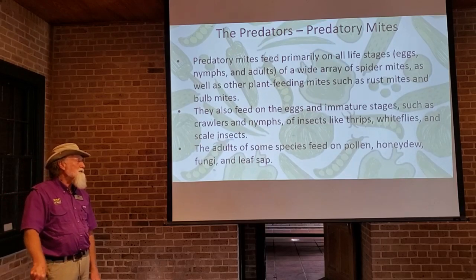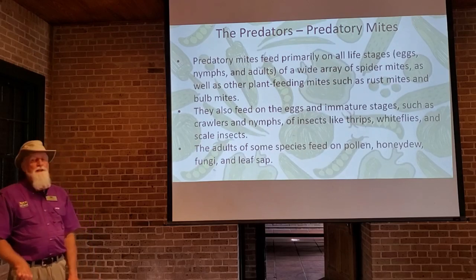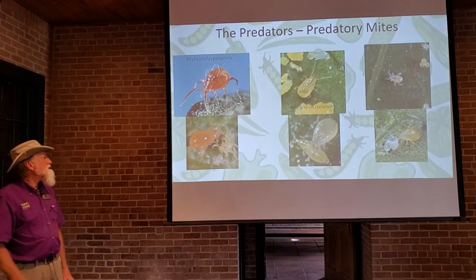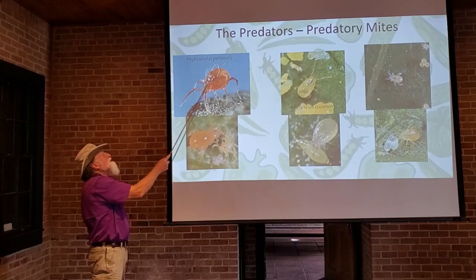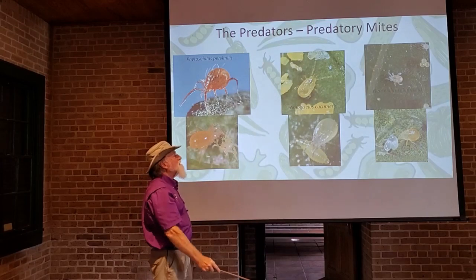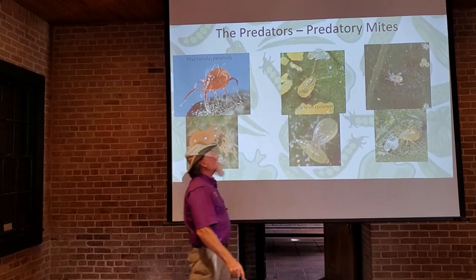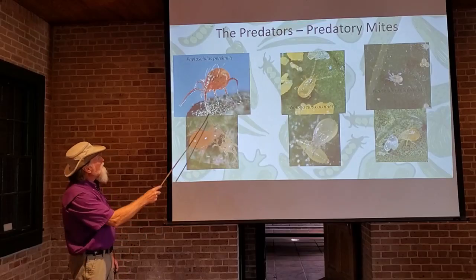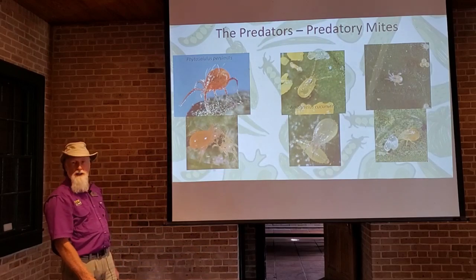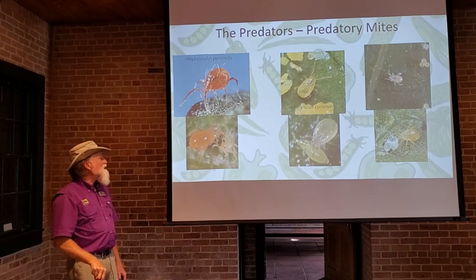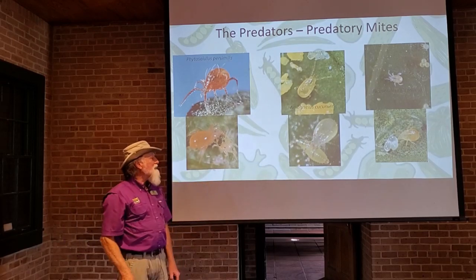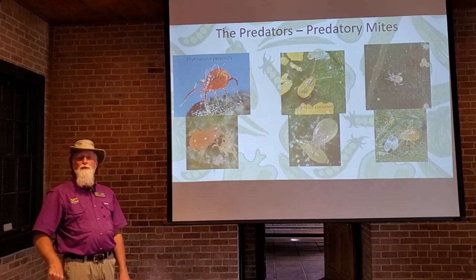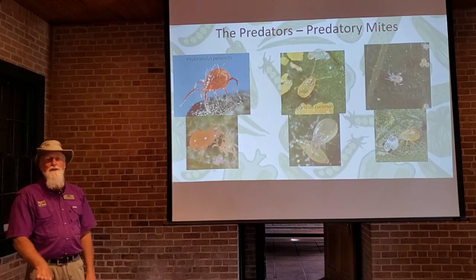Some adults of predatory mites actually feed on pollen, honeydew, and even fungi growing on your plants. Here are some pictures of predatory mites — they have a much more rounded, pear-shaped body than the bad-guy mites. It's a satisfying sight to see: a predatory mite devouring a two-spotted spider mite, or a predatory mite devouring the larvae of a thrips. They're in there doing their job and helping us out.